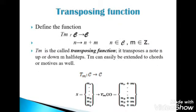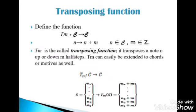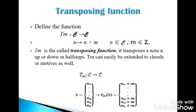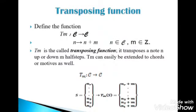The Transpose function is T of n. That is 2. We are doing a set of chromatic scale. We are doing a set of n plus m. If n is a chromatic scale, n plus m is an integer.